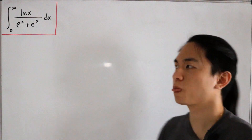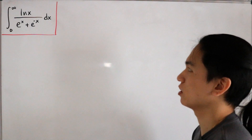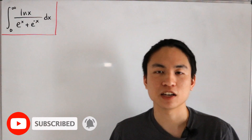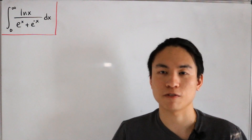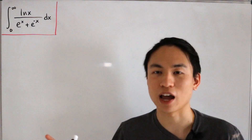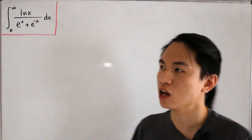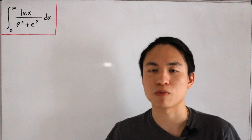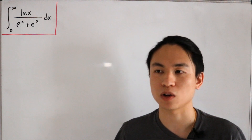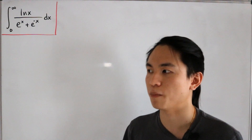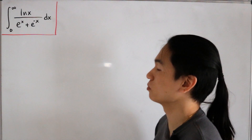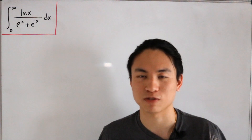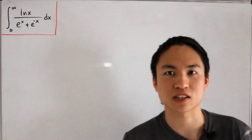Welcome back. Here's an improper integral where everything consists of natural logs and exponential functions: the natural log of x divided by e^x plus e^(-x), dx. Interestingly, the result of this integral is exactly the same as another beautiful integral — I won't name it yet until we evaluate. The result comes down to approximately negative 0.26. So let's jump right in.